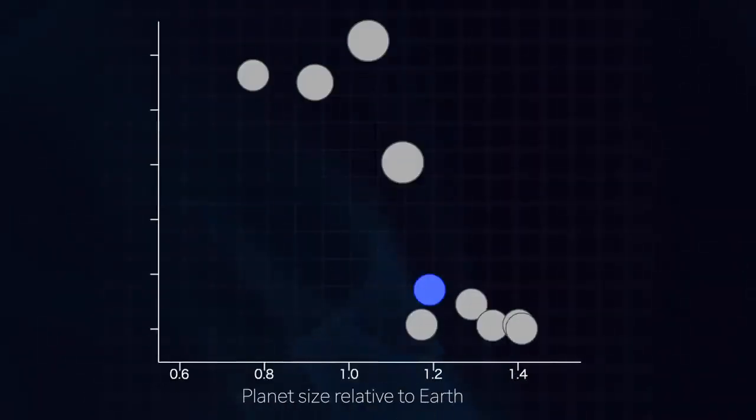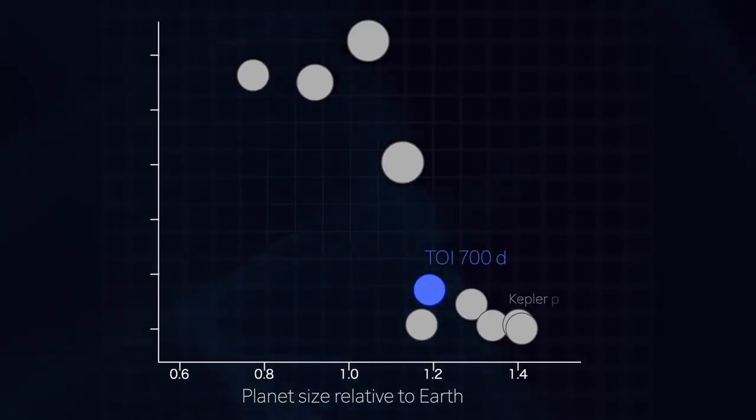TOI-700d is one of only a few Earth-sized planets found in potential habitable zones. Others include discoveries by Kepler and several planets in the TRAPPIST-1 system.